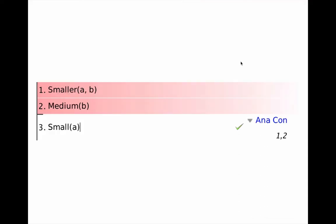Back at the first example of an inference that is an analytical consequence of the premises, we see again that we get the check mark. When we say that line three is justified by lines one and two by Anacon, we get the check mark. So in Fitch, Anacon is essentially a validity checker, a logical consequence checker — more specifically, an analytical consequence checker. It's the broadest mechanism in Fitch.